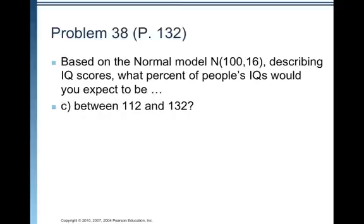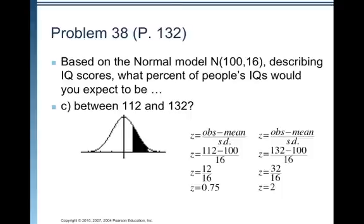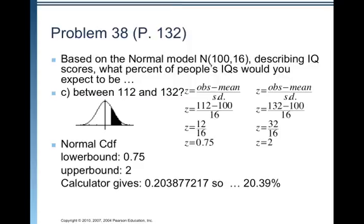Between 112 and 132, this time we're going to have to find two Z scores, one for 112 and one for 132. For 112, we calculate and we get 0.75. For 132, we do the 132 minus 100 over 16, and we get 2. So, then we draw a picture. We have our standard normal curve there. The smaller Z value, our lower bound would be 0.75. The larger one, the upper bound is 2, and we've shaded everything in between. We're going to use our calculator. We're going to do normal CDF with lower bound of 0.75 and upper bound of 2, and so we find that 20.39% of individuals have IQs between 112 and 132.